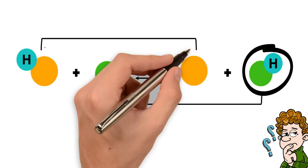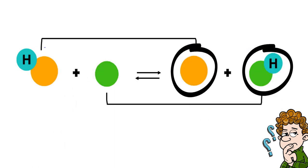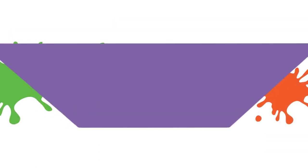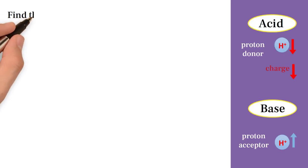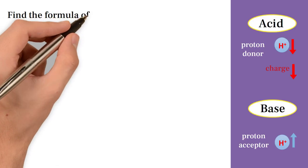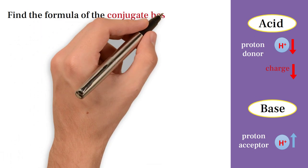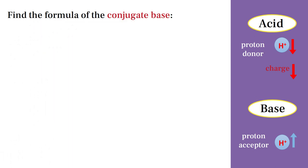But how can we find the formula of the conjugate acid and the conjugate base in reactions? Let's learn that together. Conjugate base formula. First, we will figure out how to find the formula of the conjugate base, which means that the following examples are acids — that is, as we know, they will be proton donors.